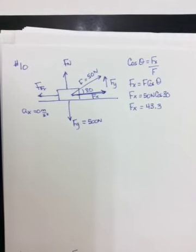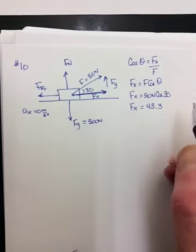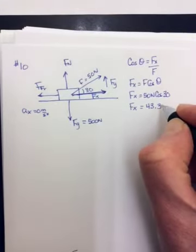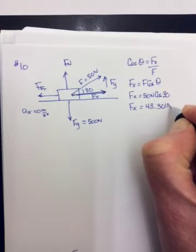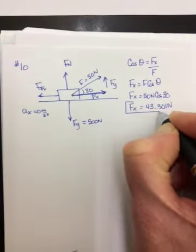What is it multiplying by 50? 43.301 newtons. That's part A.